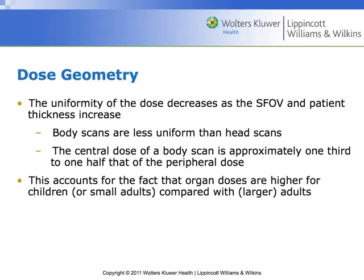The central dose for a body scan is approximately one-third to one-half of the peripheral dose. Out on the skin is where we start to see a lot of the dose. As we get closer to the center of the body, we see less. This accounts for the fact that organ doses are higher in children or small adults, because we've moved that peripheral dose in closer and there's just a smaller area to scan.